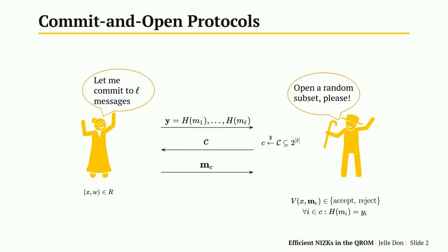I'll start by explaining the words in the title of our paper. Commit and Open Protocols are a subclass of three-round interactive proof systems, also known as Sigma Protocols. In Commit and Open Protocols, the prover in the first round commits to a number of messages via a hash-based commitment scheme, which we can model as a random oracle in order to do a security reduction. We may then apply the Fiat-Shamir transformation to obtain NIZKs — non-interactive zero-knowledge proof systems — or a digital signature scheme.